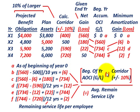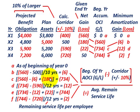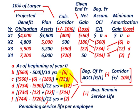To summarize: take beginning-of-year accumulated other comprehensive gain or loss, subtract your calculated corridor amount, and divide by average remaining service life to determine your minimum amortization gain or loss. To determine the next year's beginning accumulated other comprehensive income, take the beginning-of-year balance, subtract any minimum amortized gain or loss recognized, and add back the given end-of-year net gain or loss from the previous year.